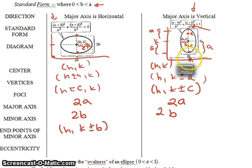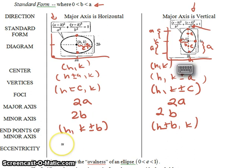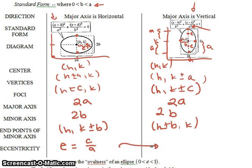For the vertical case, to get to the endpoints of the minor axis you go over H and subtract or add B from H, giving (H ± B, K). The eccentricity measures the ovalness of the ellipse; it is always a number between 0 and 1.